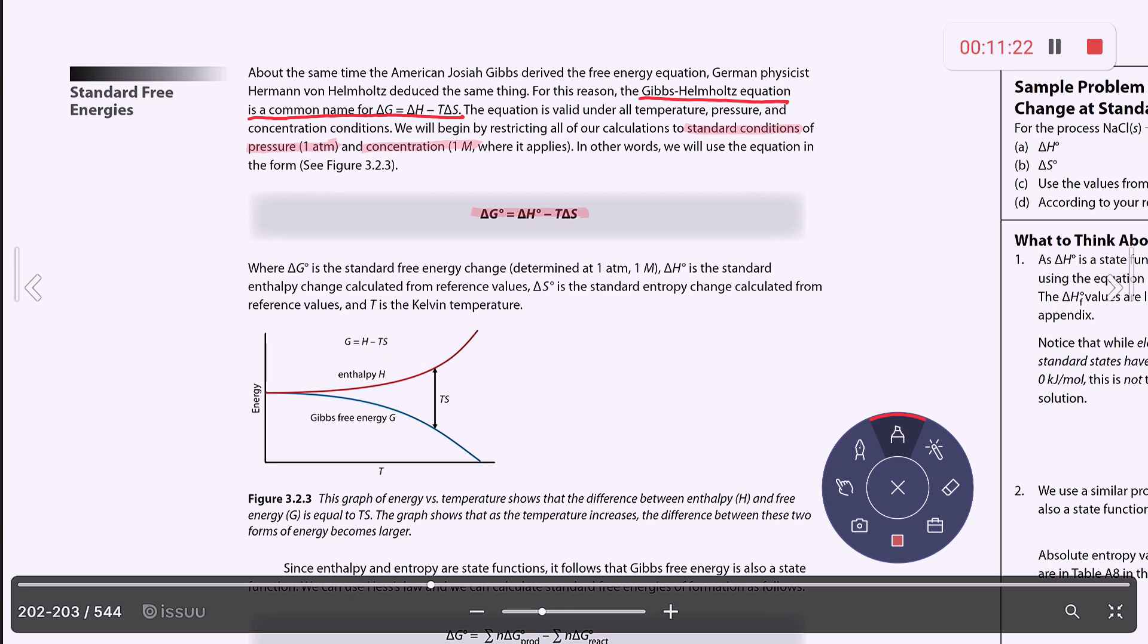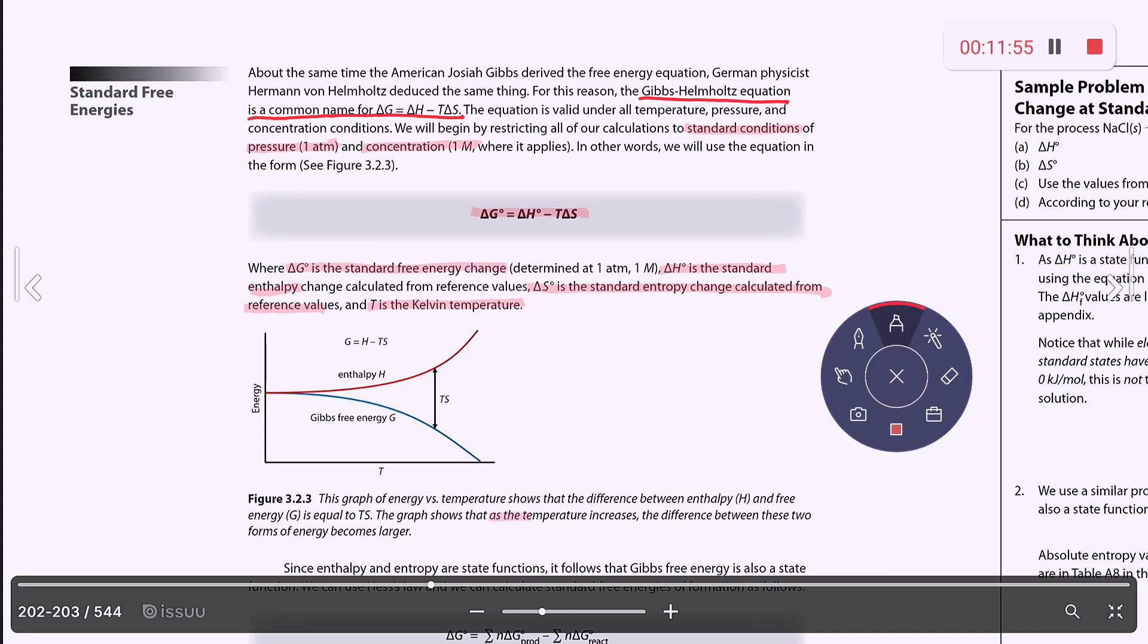So the standard free energy change, that little degree symbol means standard, equals the standard enthalpy change, which we calculate from the reference values in the back of the book, and then minus T, which is temperature in Kelvin, times delta S. That's the standard entropy change calculated from the reference values in the back of the book as well. And there is a graph that shows you energy versus temperature and the difference between enthalpy and free energy and TS. So what this shows you is that as the temperature increases, the difference between these two forms of energy becomes larger.